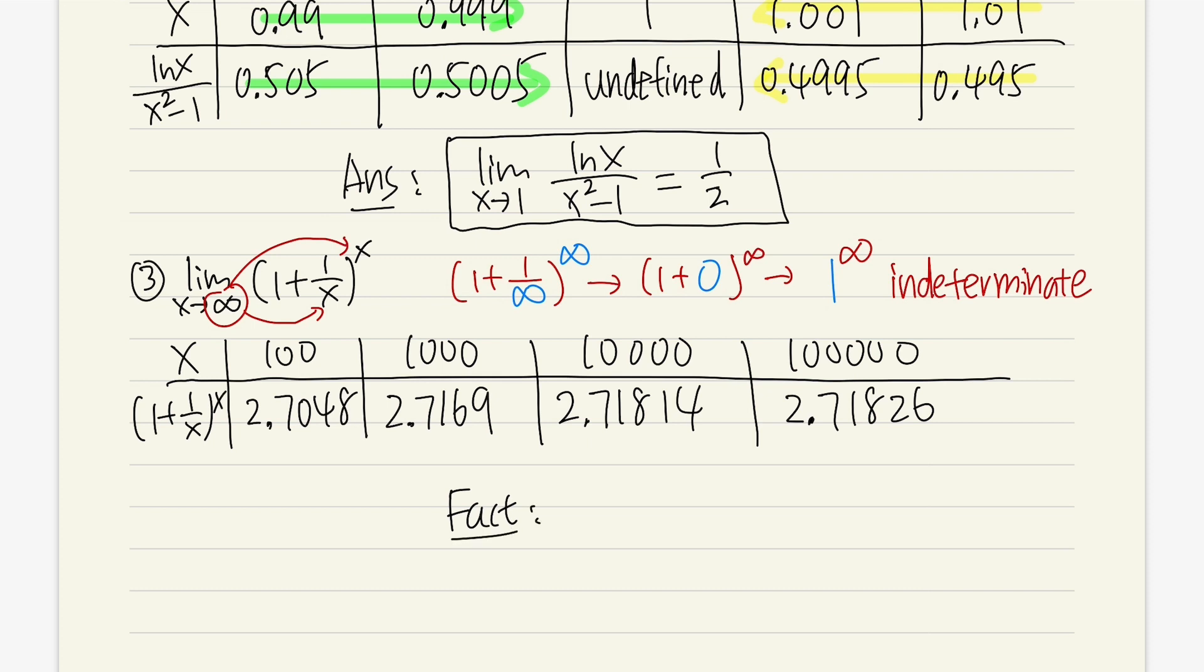Here's the fact for you guys. In fact, the limit as x approaching infinity of 1 plus 1 over x raised to the x power, which is about like this. This is the number e. This is one way to define the number e, which is about 2.71828 and so on, so on, so on. So as you can see, 1 to the infinity's power, when we are dealing with limit, this is an indeterminate form.